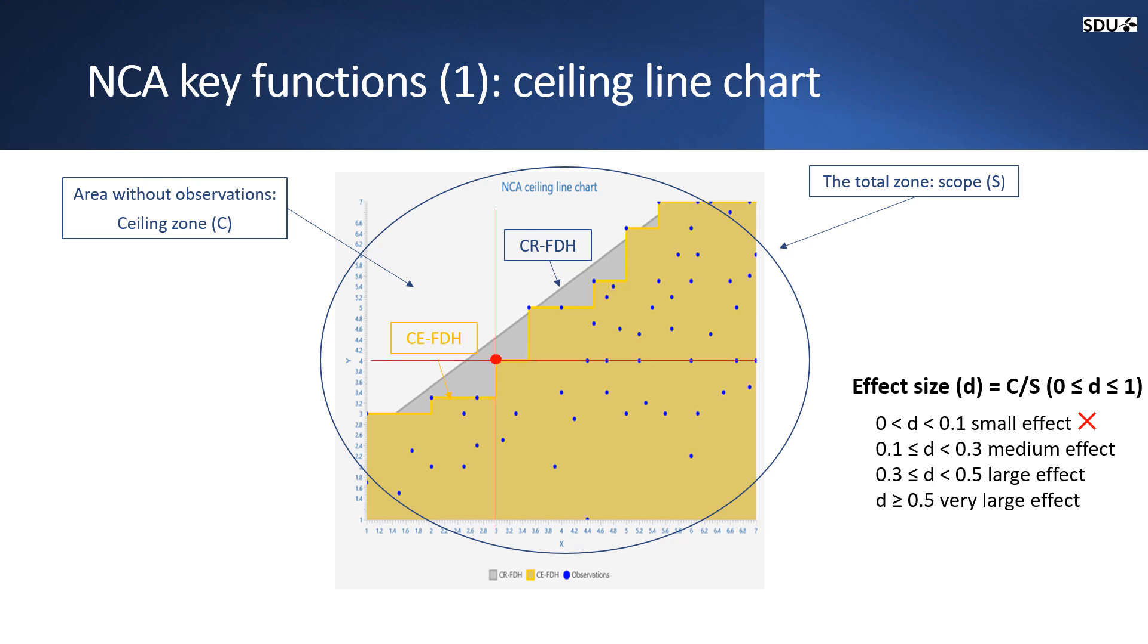Here you see that the ceiling line specifies the minimum level of X that is necessary to achieve a certain level of Y. When any independent variable here, X, has a level below 3, you can see that there is no observations of Y that is above 4. So we can say that a minimum value of 3 for X is needed if you want a value of 4 for Y.